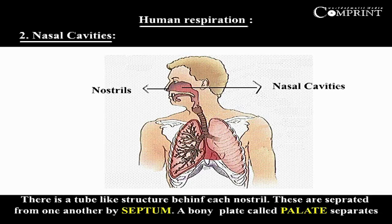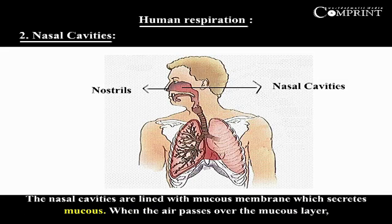Nasal Cavities: There is a tube-like structure behind each nostril. These are separated from one another by a septum. A bony plate called the palate separates the oral cavity from the nasal cavities. The nasal cavities are lined with a mucous membrane which secretes mucus.